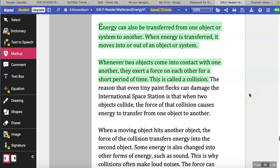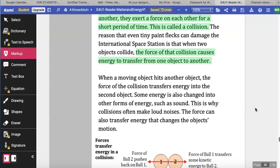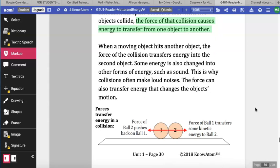The reason that even tiny paint flecks can damage the International Space Station is that when two objects collide, the force of that collision causes energy to transfer from one object to another. When a moving object hits another object, the force of the collision transfers energy into the second object. Some energy is also changed into other forms of energy, such as sound. This is why collisions often make loud noises.